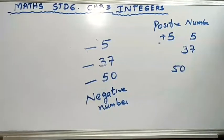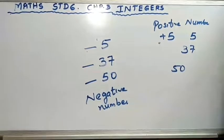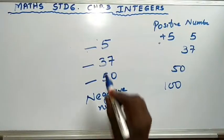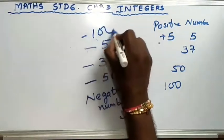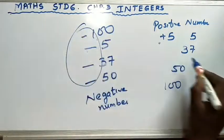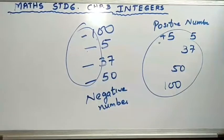Let's talk about a greater number. Let's say 100. So minus 100 is a negative number, and how do you write plus 100? You write just 100. But minus 100 you write as minus 100. So these are the negative numbers and these are the positive numbers — we call this as integers.